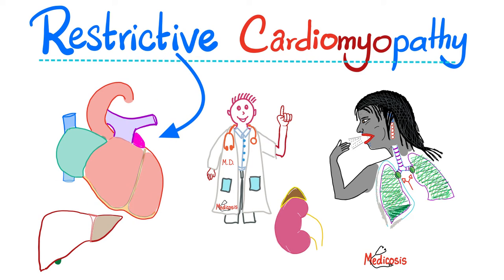This heart cannot fill, and if there is less input, there will be less output — so there is less cardiac output coming out of the heart. What causes restrictive cardiomyopathy? Sarcoid, amyloid, hemochromatosis, cancer, and fibrosis.